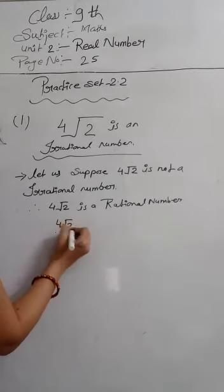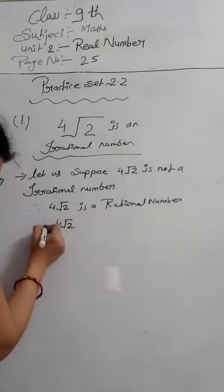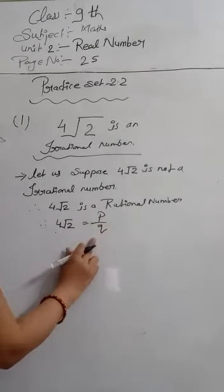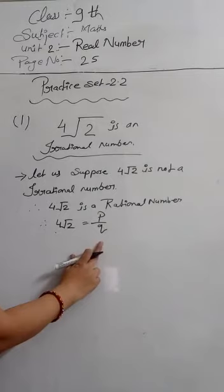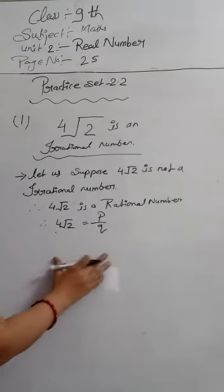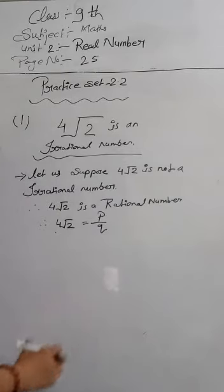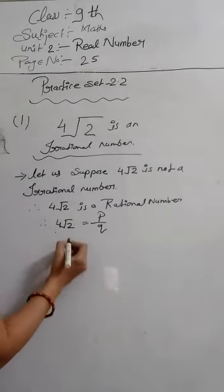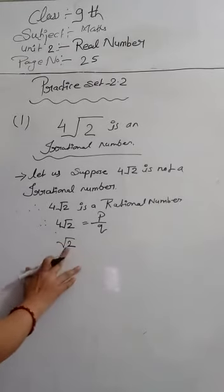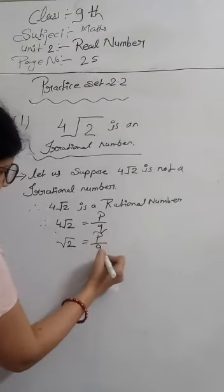So 4√2 will be equal to p/q, because it is in the rational form p/q. We will write root 2 on the left and p/q on the right.